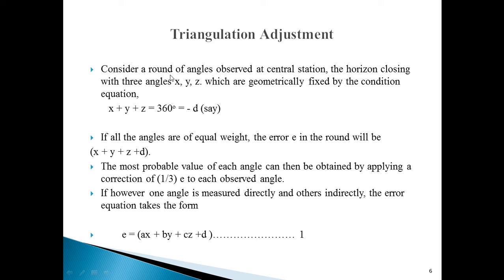Consider a round of angles at a central station with three angles x, y, and z, which are geometrically fixed by a condition equation. If we add the three angles, their sum is 360 degrees. If all angles are of equal weight, the error e in the round can be found, and the most probable value of each angle is obtained by applying a correction. Since the weightage is the same, we can equally divide error e into three parts — e/3 to each observed angle.